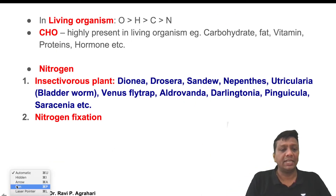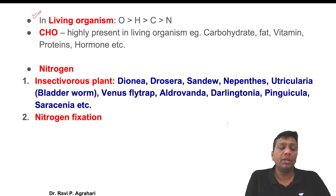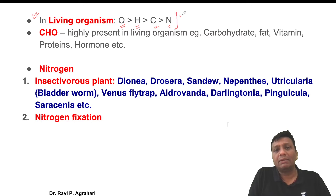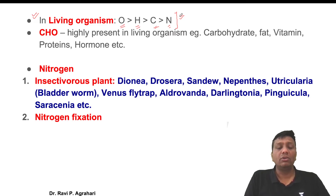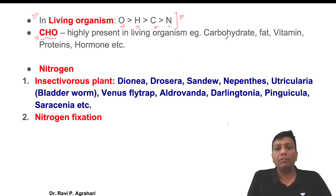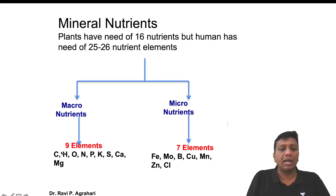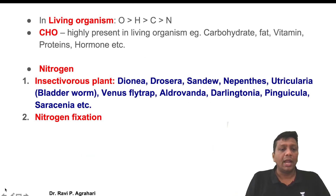Some important factual data: if asked about the order of elements in a living organism, the maximum is oxygen, then hydrogen, then carbon, then nitrogen. This is a confusing question seen in UGC NET examinations - oxygen is number one, hydrogen is number two, carbon is number three, nitrogen is number four. Carbon, hydrogen, and oxygen are highly present in the living body - in carbohydrates, fats, vitamins, proteins, and hormones everywhere you see carbon, hydrogen, and oxygen.